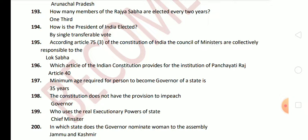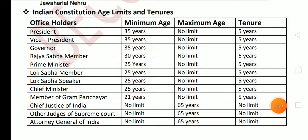Next question: who uses the real executive power of the state? The answer is the Chief Minister. Next question: in which state does the Governor nominate women to the assembly? The answer is Jammu and Kashmir. Now an important table: office holders with their minimum age requirements, maximum age limits, and tenure. President — minimum age 35 years, no maximum age limit, tenure 5 years.